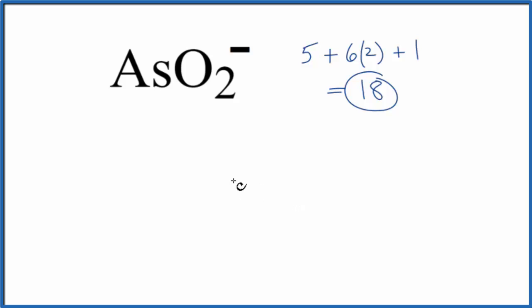We'll put the least electronegative element at the center of our Lewis structure. That's going to be As, and then we'll put an oxygen atom on either side. We have 18 total valence electrons for the AsO2 minus Lewis structure.